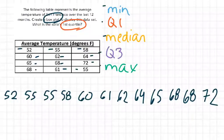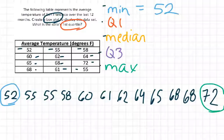So let's start with the minimum. Well, minimum is just the lowest number. So the minimum equals 52. Let's do the maximum because that's easy as well. The maximum is the greatest number, which here is 72.